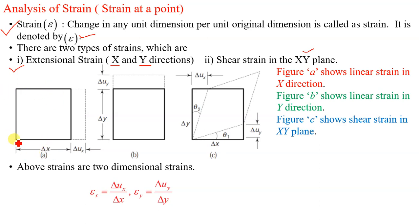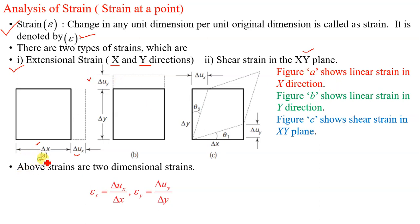We are having an element with dimensions delta x in the x direction and delta y in the y direction. If there is a change in dimension delta x, this change is shown by delta ux — the change in x direction. Figure a shows linear strain in x direction because there is change in x direction.